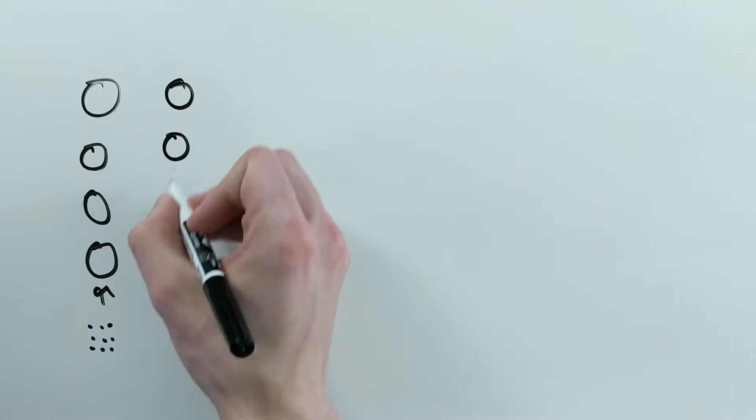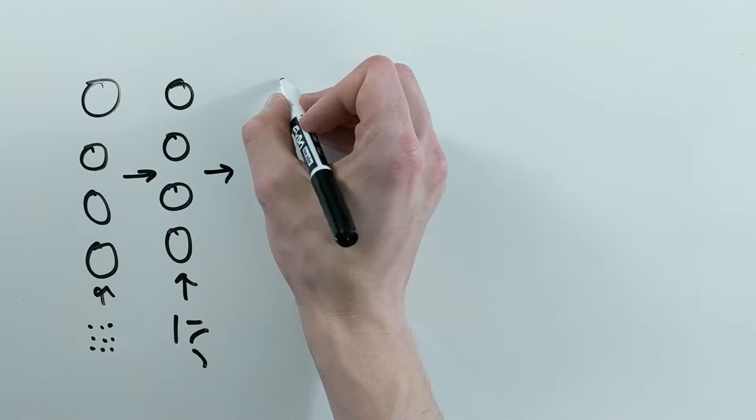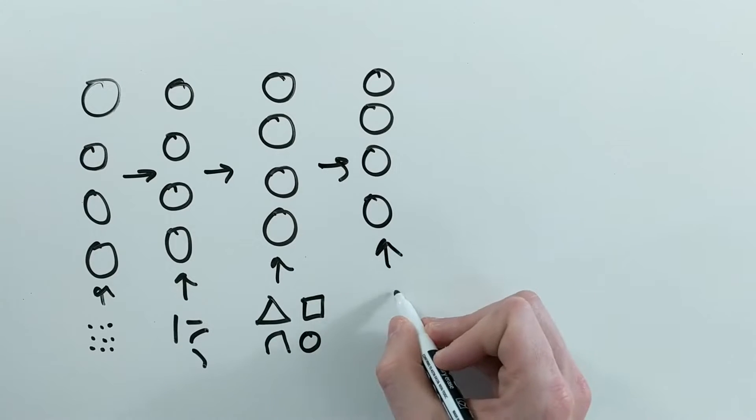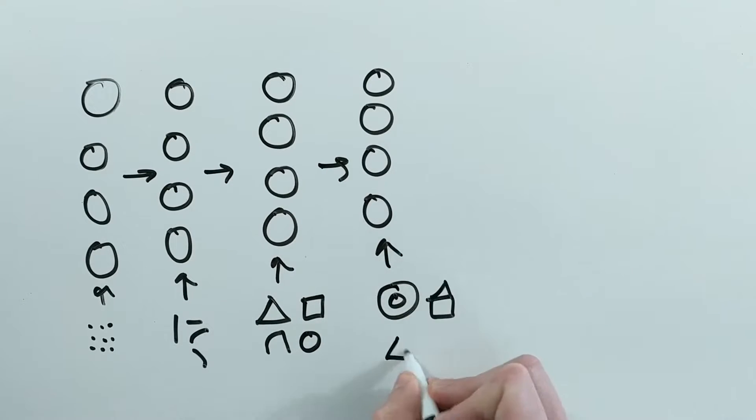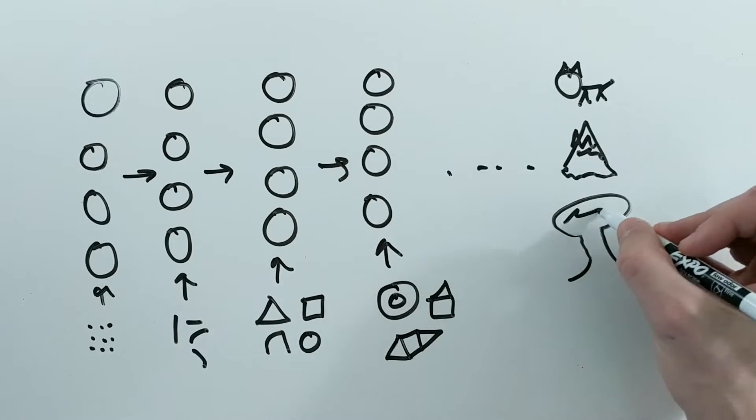In image classification, this would be like having the first layer make lines from the pixels, the second layer combine the lines into different shapes, the third combine the shapes into more complicated shapes, and so on until we've built up internal representations for cat, mountain, tree, and so on.